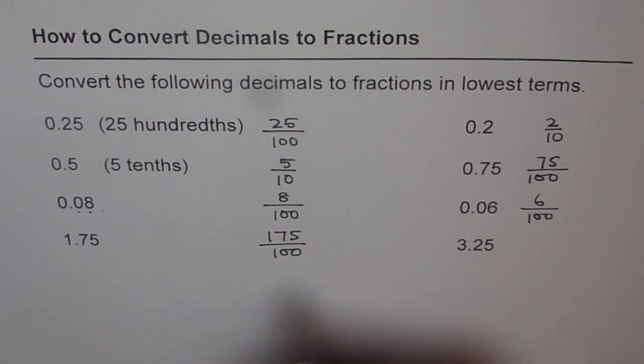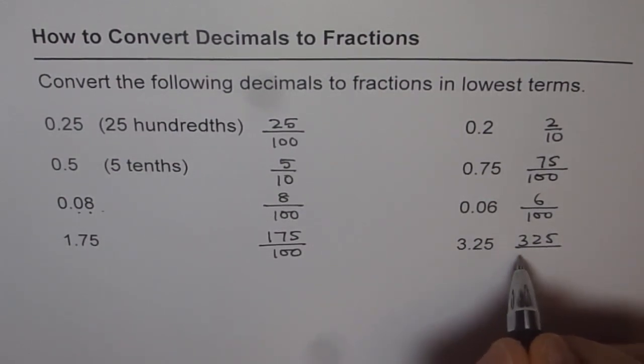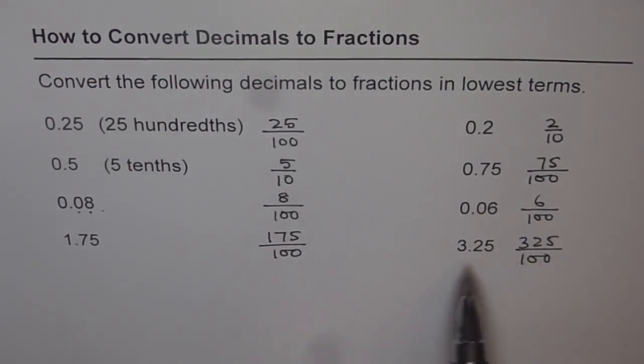And 3.25 just as this case will be 3 and 25 hundredths. Now 25 is hundredth part, so we get 100. So that is the first part. We have converted decimals to fractions.